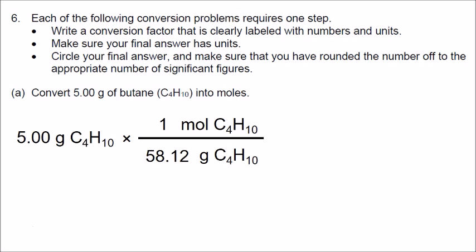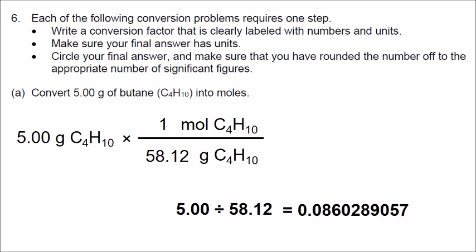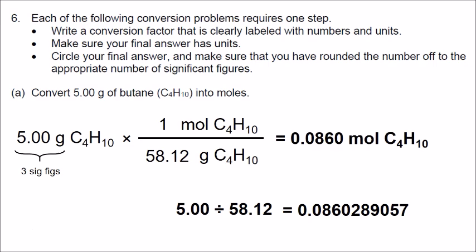Now that we have set up our conversion factor correctly, we do the math and round off the final answer to the proper number of significant figures. We do 5 divided by 58.12 on our calculator and get a long number with many extra significant figures. Looking at 5.00 grams — the given value — since that number has three significant figures, our answer should be rounded off to three significant figures. The leading zeros do not count, so our first significant figure begins with the 8, then the 6, then the final 0. Our answer is 0.0860 moles of butane.